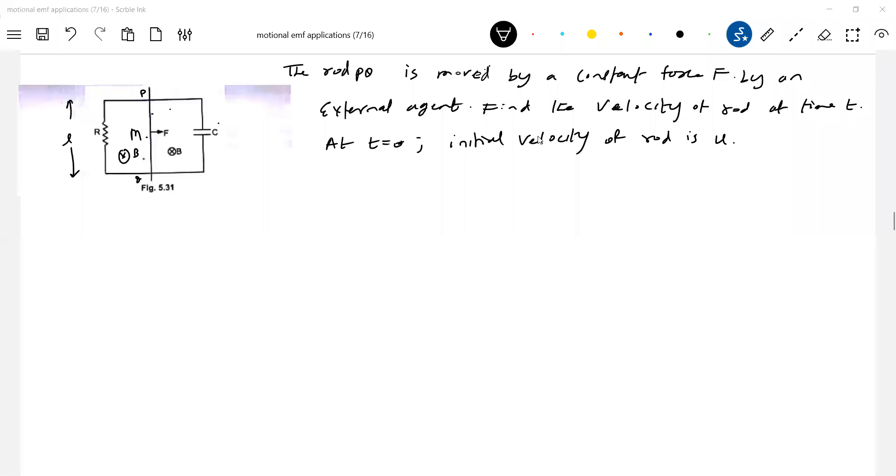When discharging, the moving rod acts like a cell. The EMF of that cell depends on the speed of the rod. Since we apply a force F, look at how the current flows. First, let's examine the different loops. We have a resistor here, and the moving rod I'll replace with a cell.